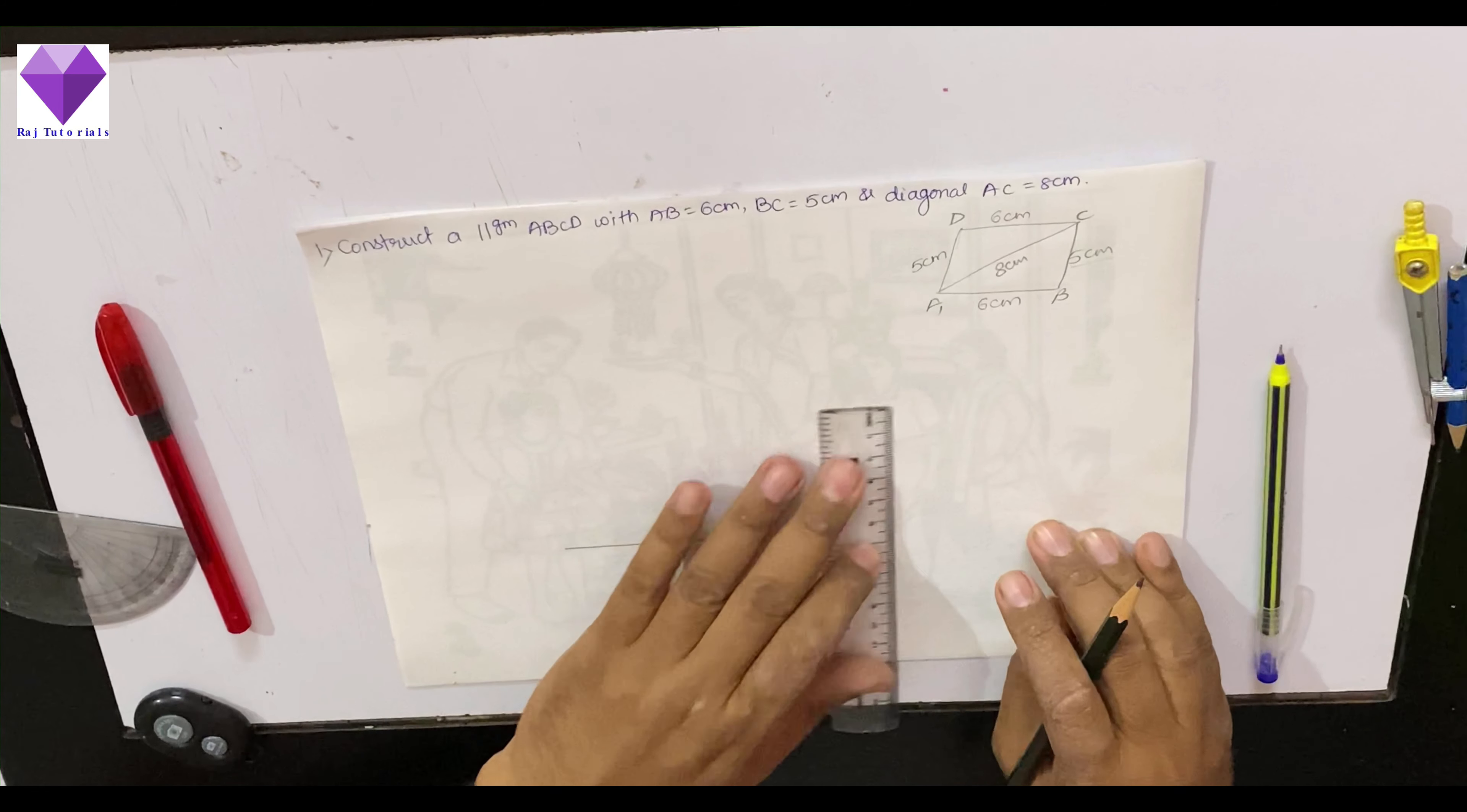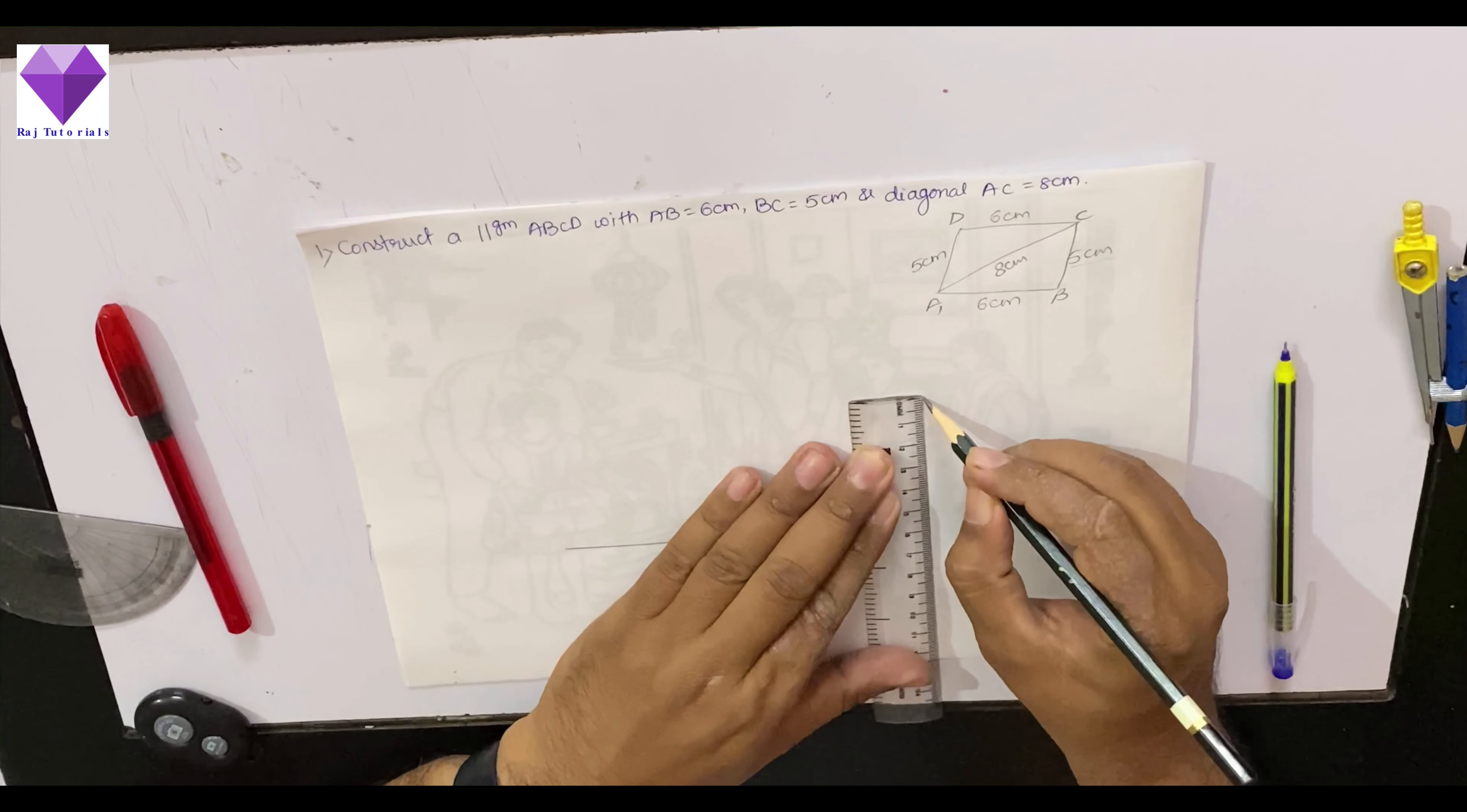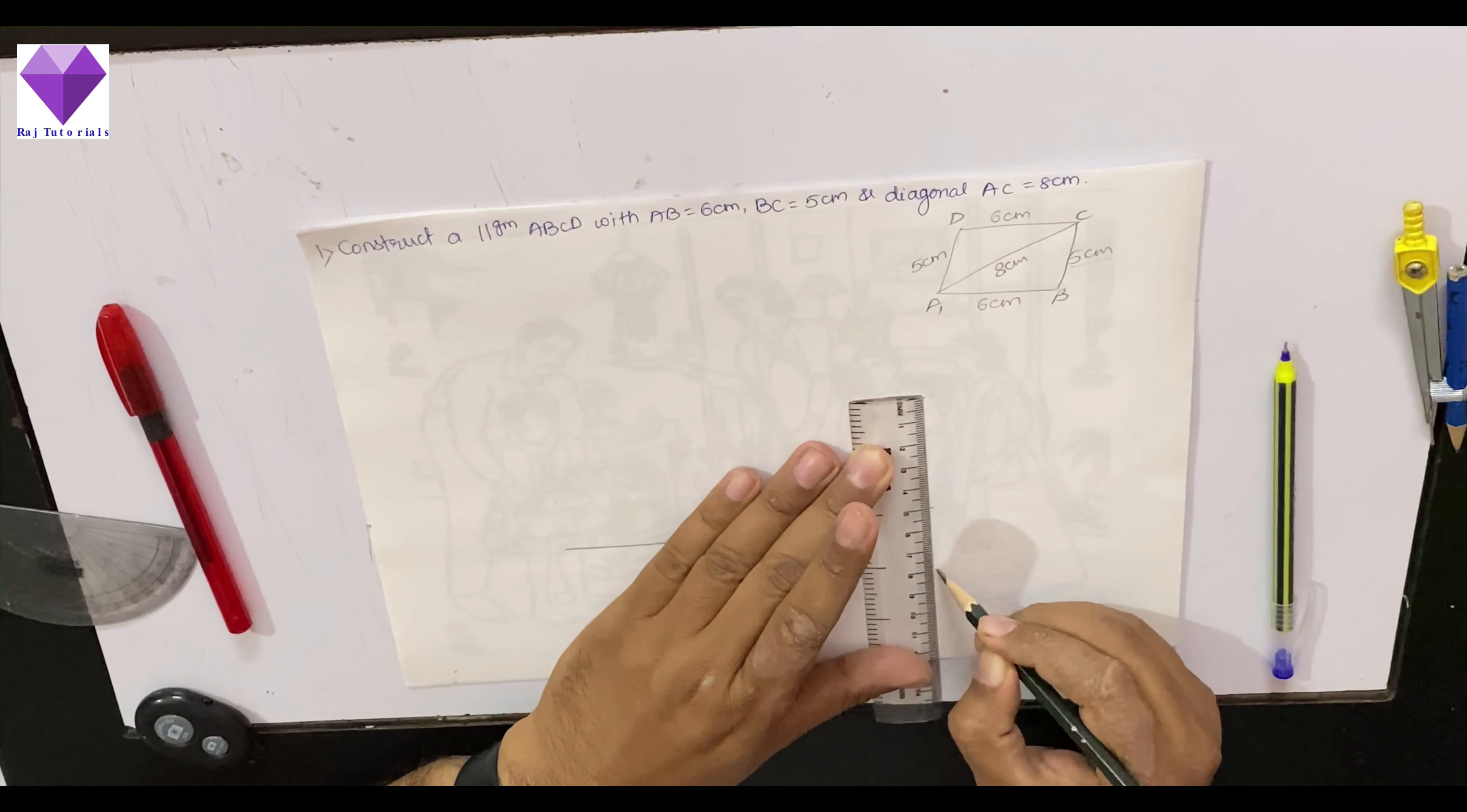Now, on this base, I want two lines, one of 8 cm, one of 5 cm. First I will be marking that so that with the compass, it will be easy for me to mark.